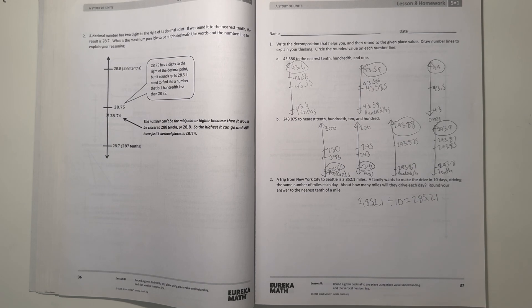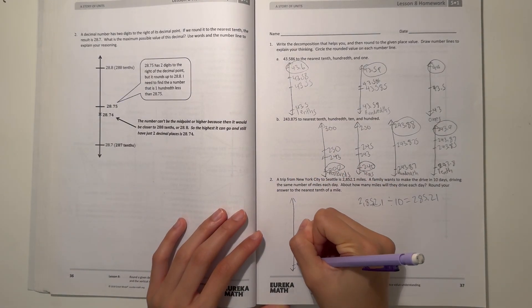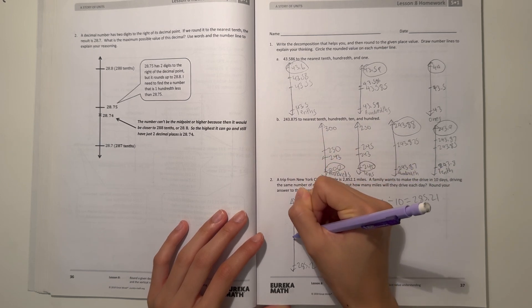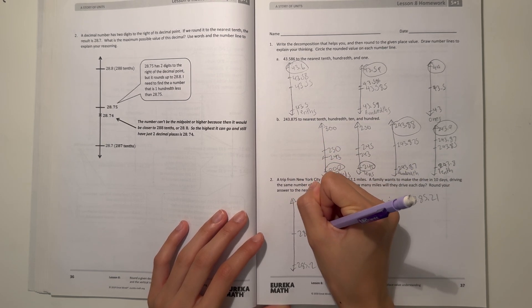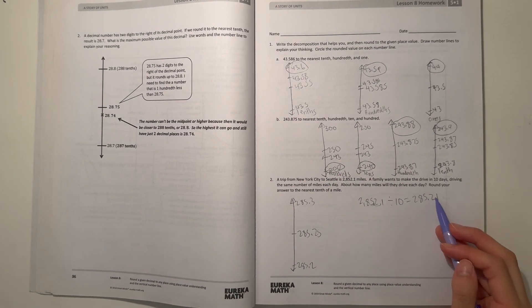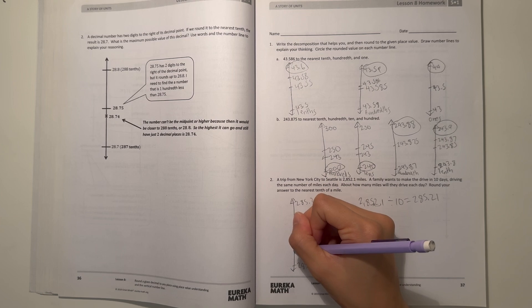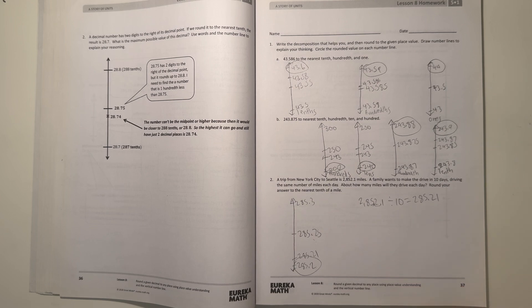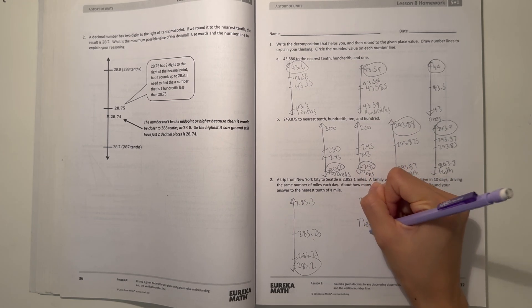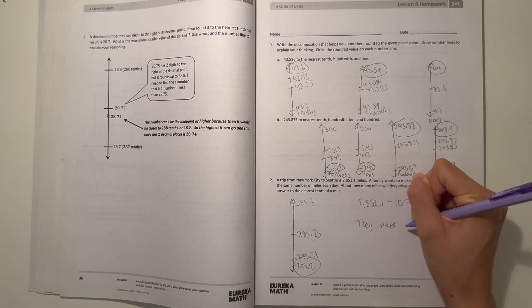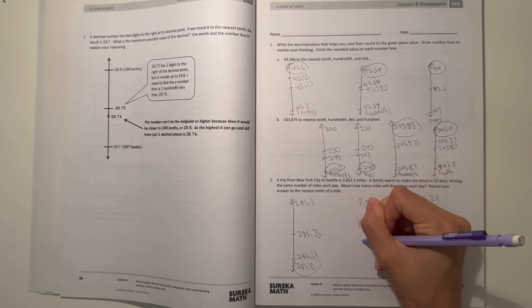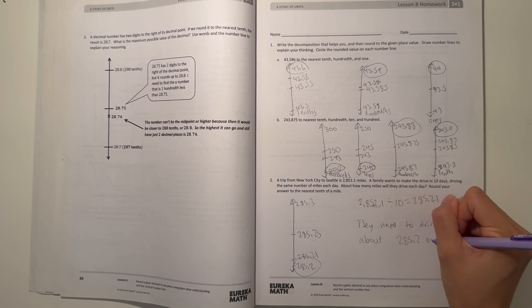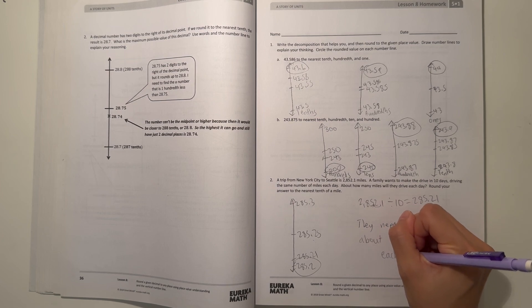That's how many miles they have to drive every day. But now let's round your answer to the nearest tenth. So this number is in between 285.2 and 285.3, and our midpoint would be 285.25. So this is 0.21, and that would be lower than 0.25. So we round it down to 285.2. So that means they need to drive about 285.2 miles each day.